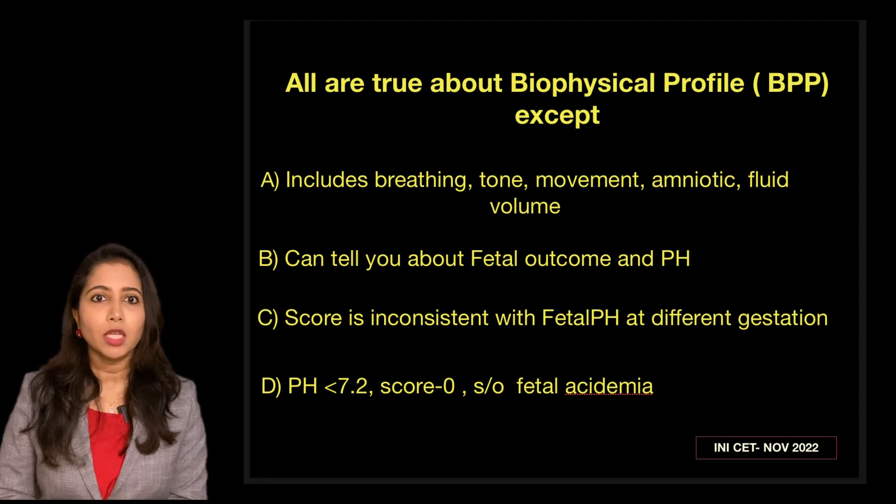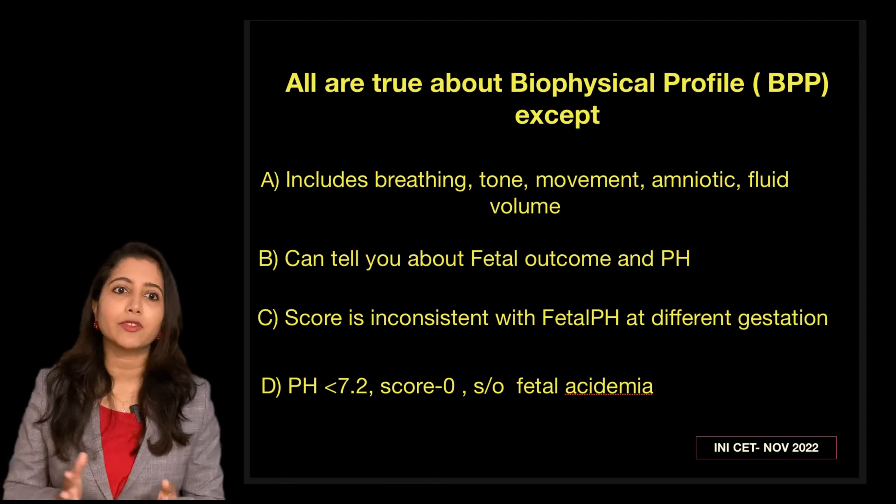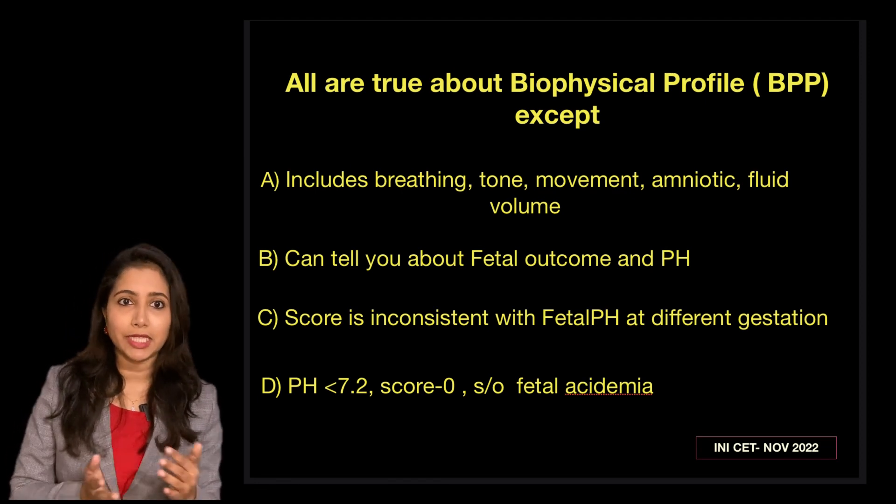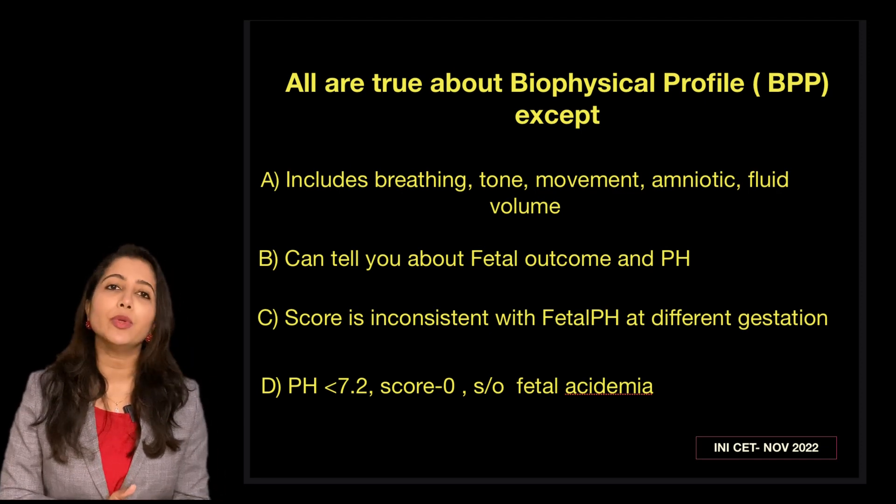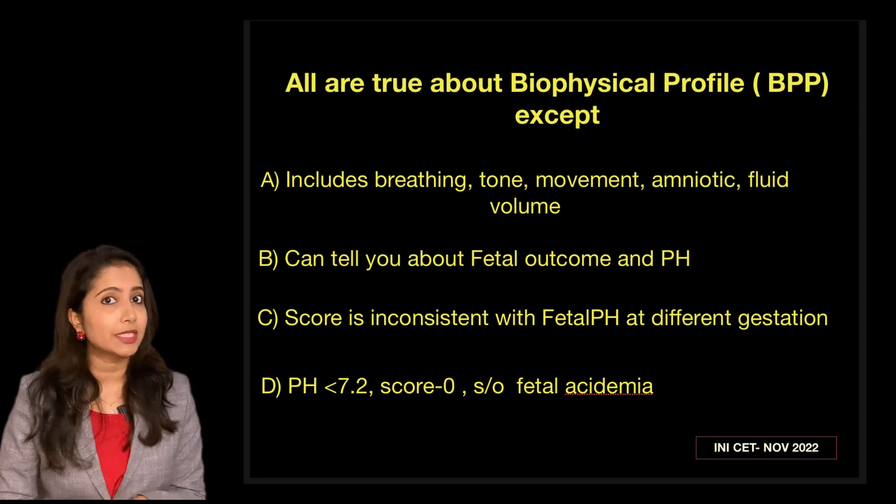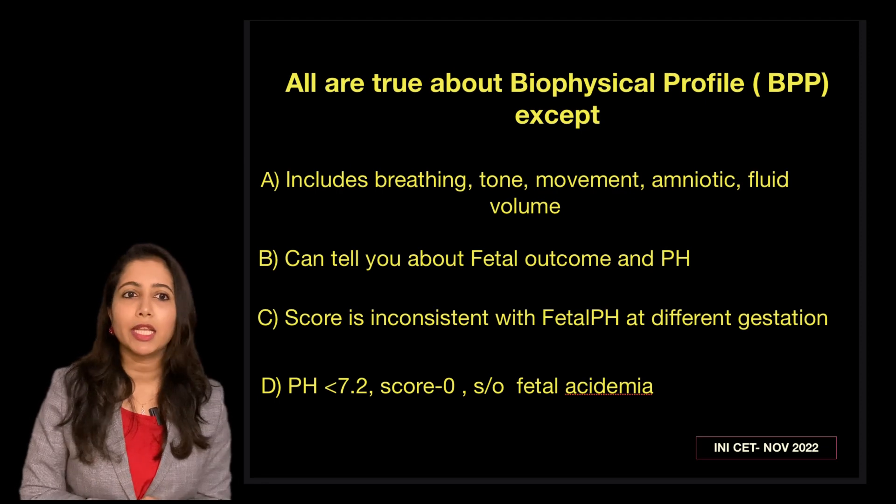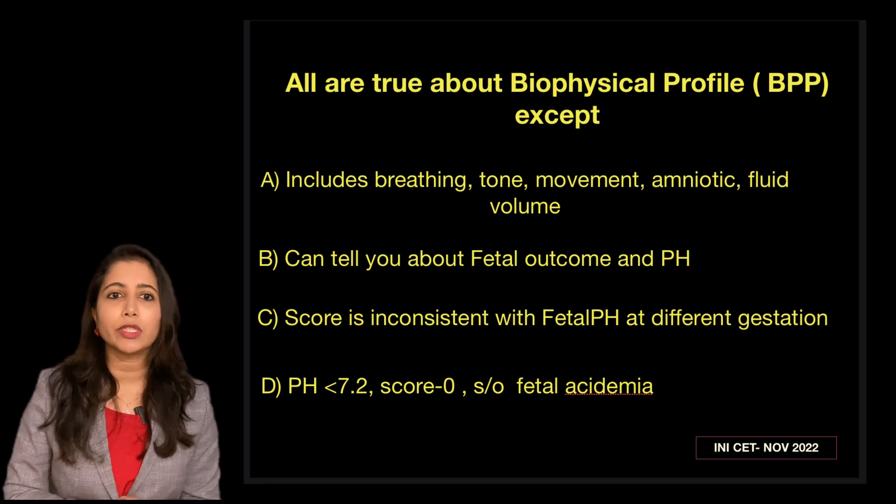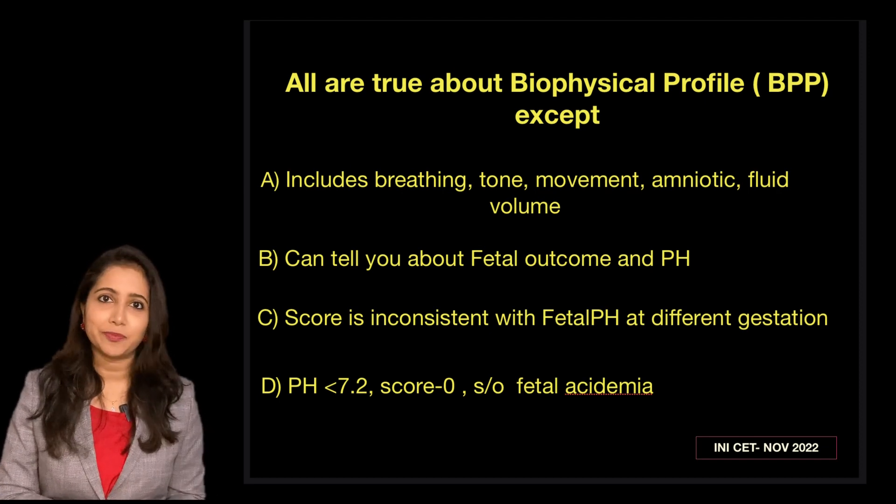A score which is less than 4 and also a pH which is less than 7.2 is suggestive of fetal acidemia. Yes, we told that the total score is 10 and the lower score is suggestive of acidemia. That's true as well. The score is inconsistent with the fetal pH at different gestational age. No, that's not the right answer.